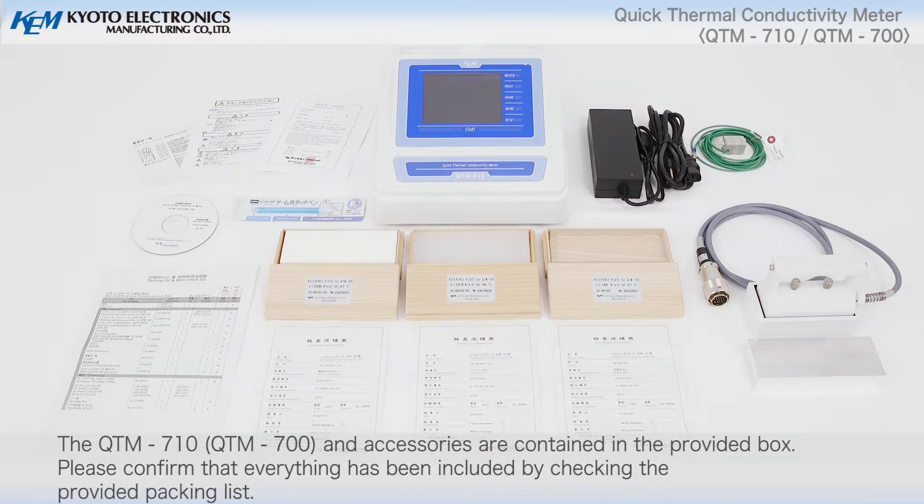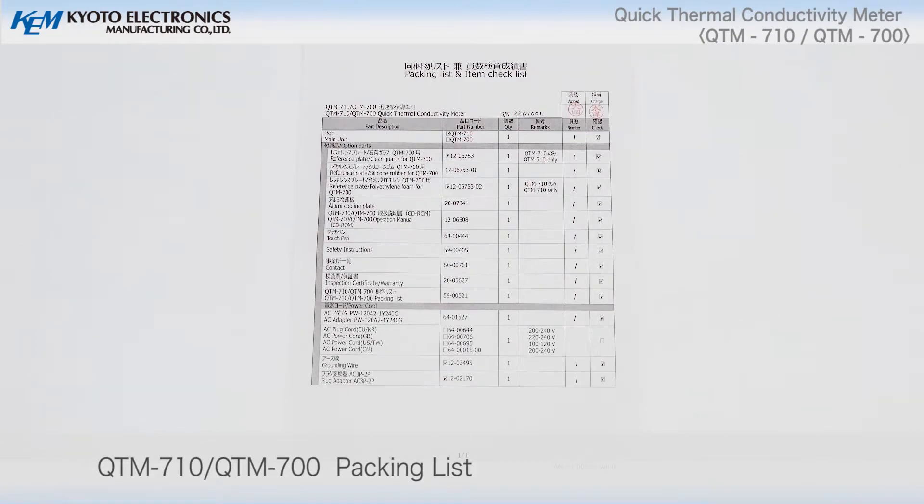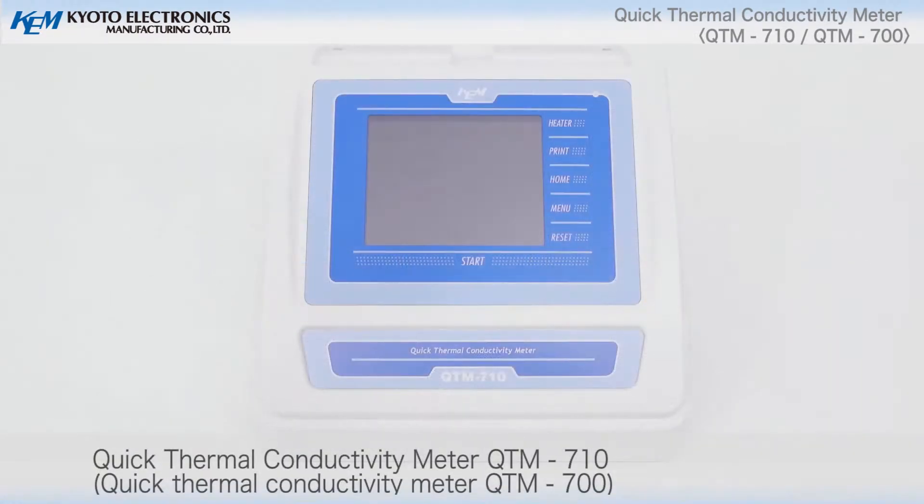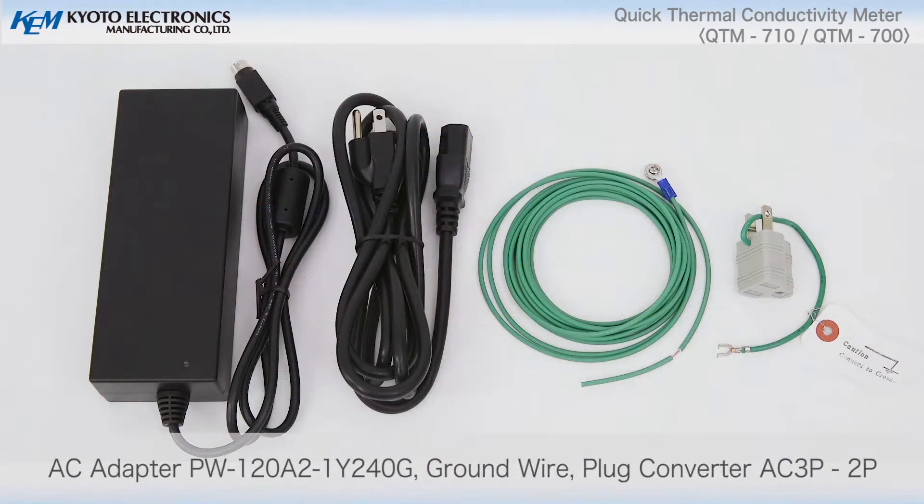Please confirm that everything has been included by checking the provided packing list. QTM-710, QTM-710, QTM-700 packing list. Quick thermal conductivity meter, QTM-710 AC adapter, PW-120A2, 1Y240G.